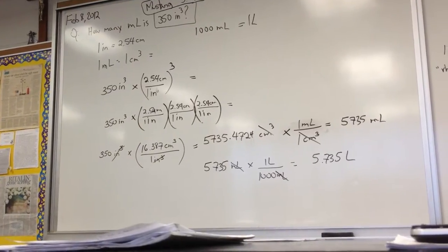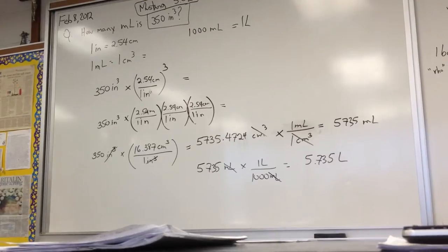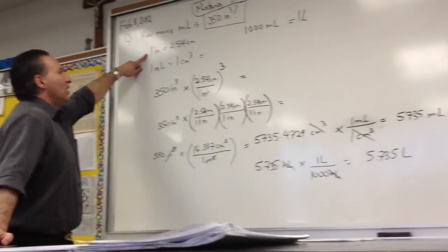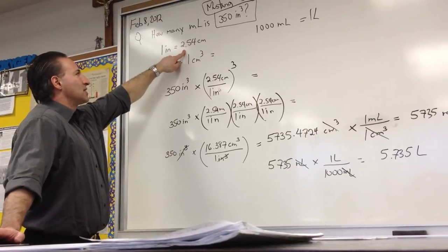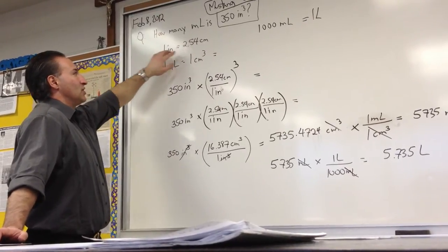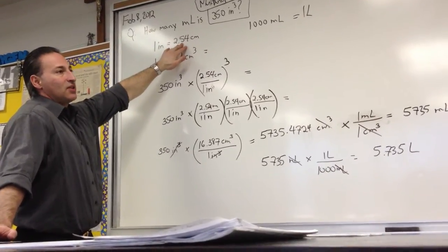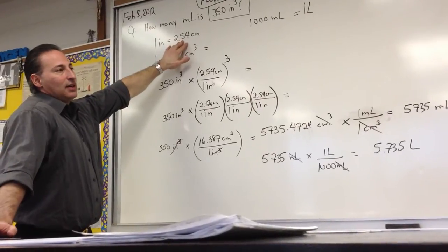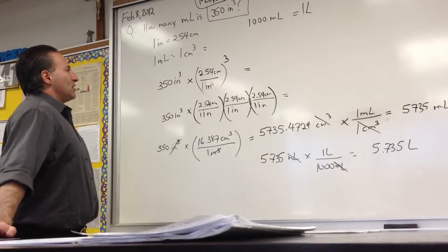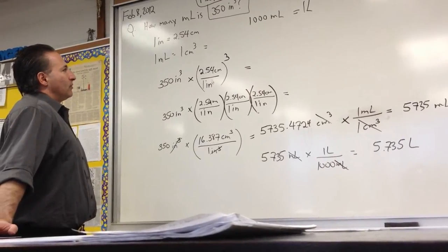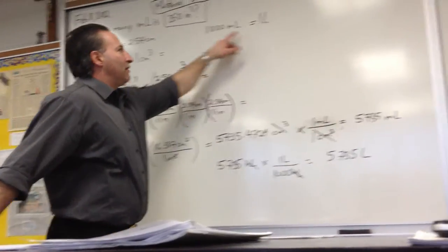To answer this question, we need to know three conversion factors. One inch is equal to 2.54 centimeters by definition. It's an exact definition. There are not three significant figures in this. It's an exact number. One mL is equal to one centimeter cubed. And in one liter, we have 1,000 mL.